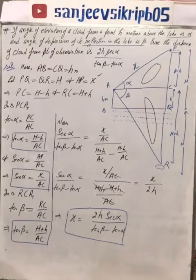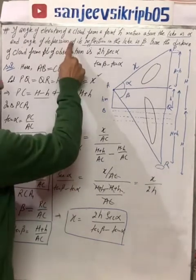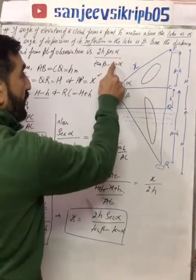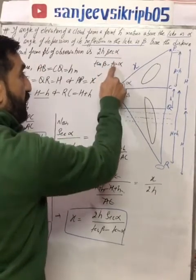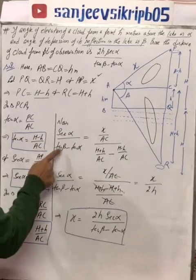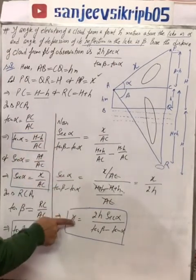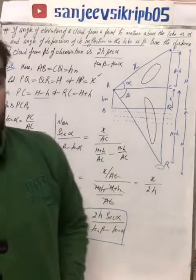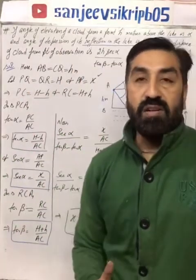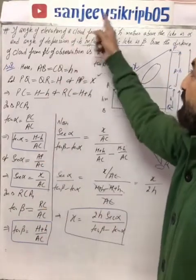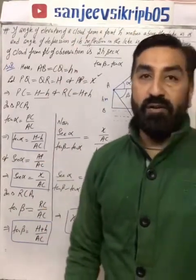So you can see how easy this question is — you just need to read the diagram carefully, draw it carefully, and then find the values of the trig ratios you need to prove. Put those T-ratios into the question and what you need to prove will come automatically. Students, if you are enjoying my questions, please keep subscribing to my channel, Sanjeev Sikri. Thank you very much.